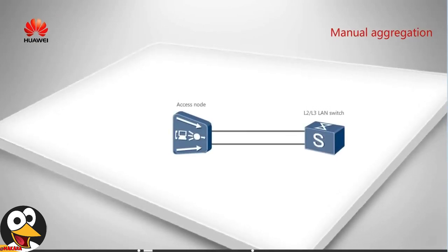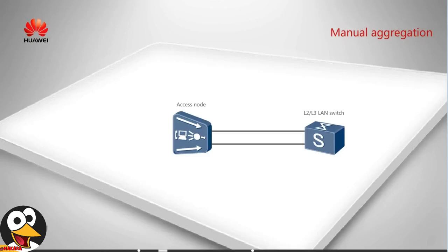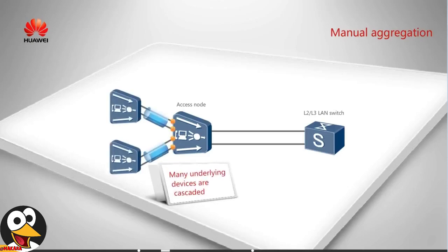Manual aggregation is recommended in the following scenarios. Scenario 1: the aggregation group is configured on the upstream ports of the access device and the upper layer device does not support LACP. Scenario 2: the access device functions as a convergence node for multiple lower layer devices and the aggregation group is configured on the downstream cascading ports of the access device. In Scenario 2, if LACP aggregation is used, the devices on both link ends will frequently exchange protocol packets, resulting in high CPU usage. Therefore, manual aggregation is recommended.